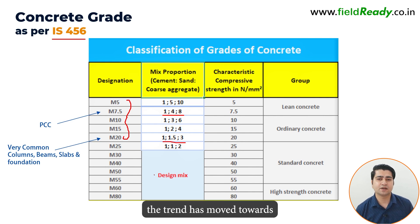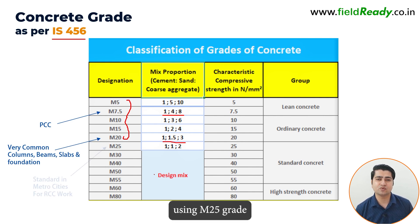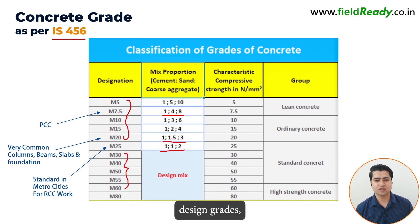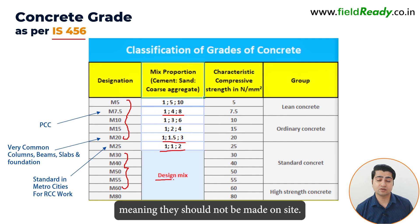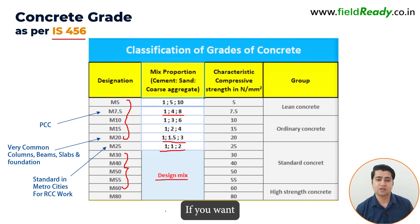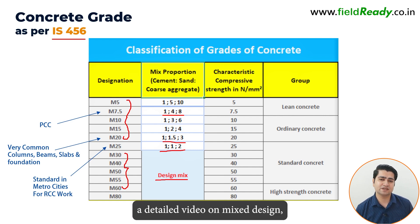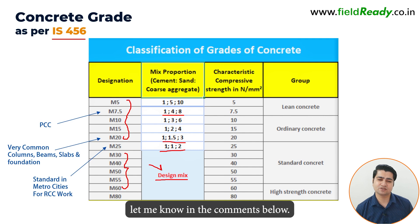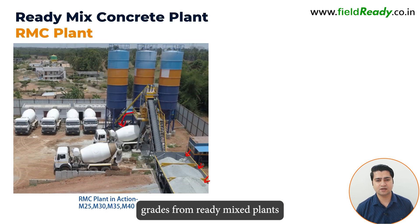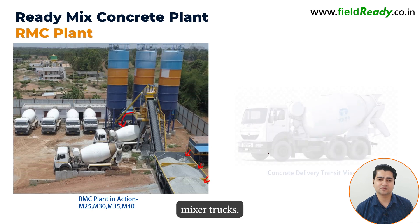In metro cities, the trend has moved towards using M25 grade as a standard. Grades M30 to M60 are mix design grades, meaning they should not be made on site. They need exact amounts of water, cement, sand, and aggregates, which are determined through a mix design process. If you want a detailed video on mix design, let me know in the comments below. Typically, we order these concrete grades from ready mix plants and they are delivered by transit mixer trucks.